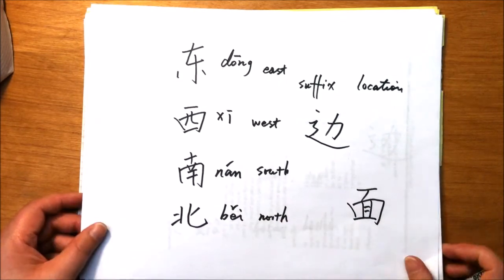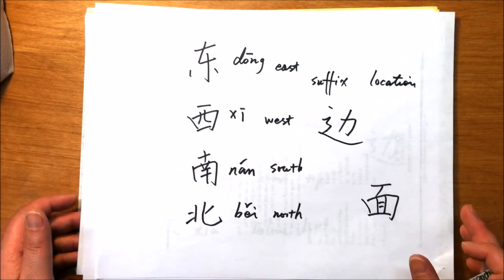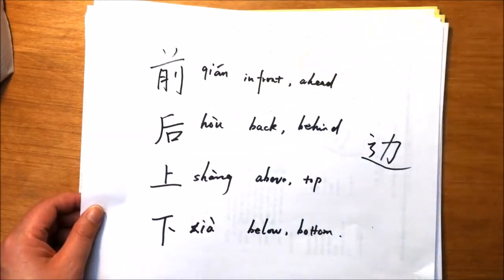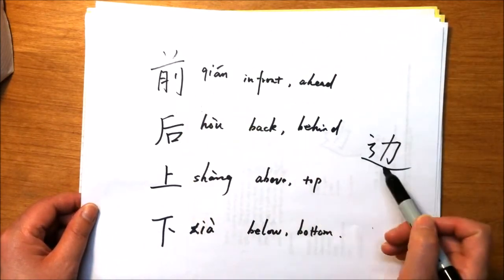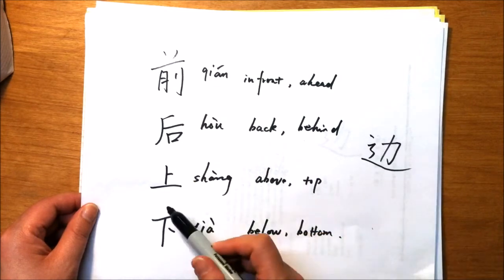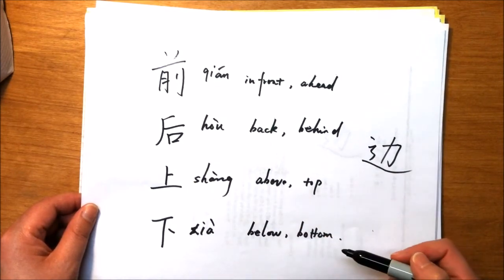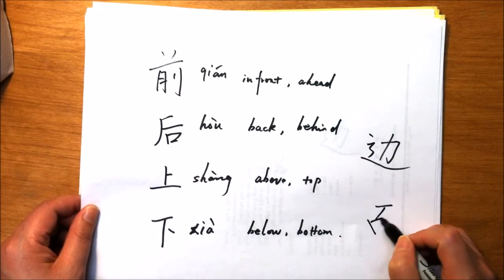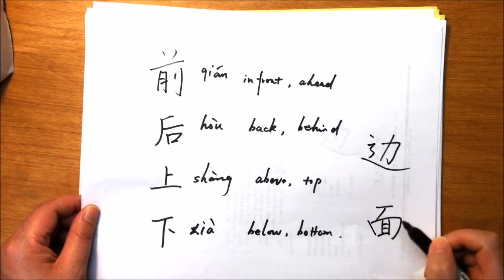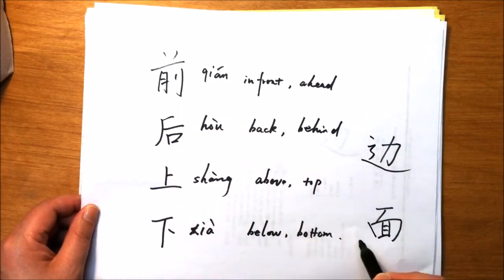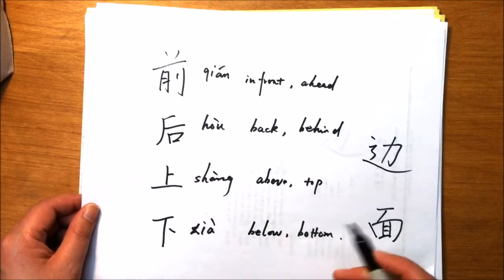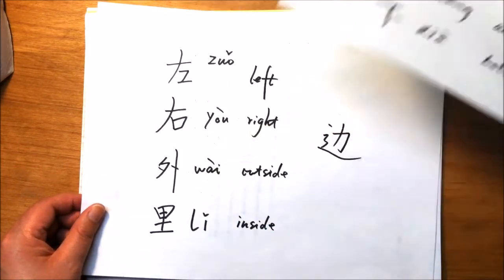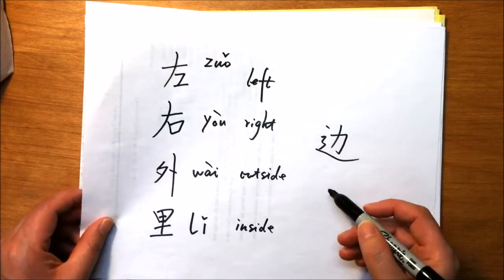Like 南面, 北面, they have the same meaning. Also 前边, 后边, 上边, 下边 can also be replaced by 前面, 后面, 上面, 下面. They have the same meaning and follow the same rule.